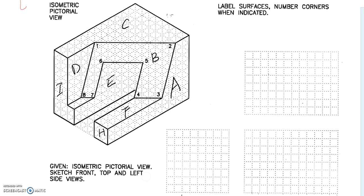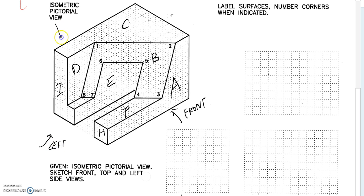This is an interesting problem. We are going to convert an asymmetric view to multiple views. This model involves not only the normal surface, but the oblique surface. We first need to determine the name of the views. Here is the front, here is the left side, and here is the top.